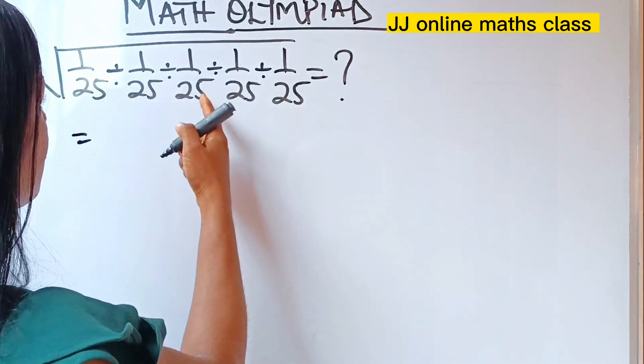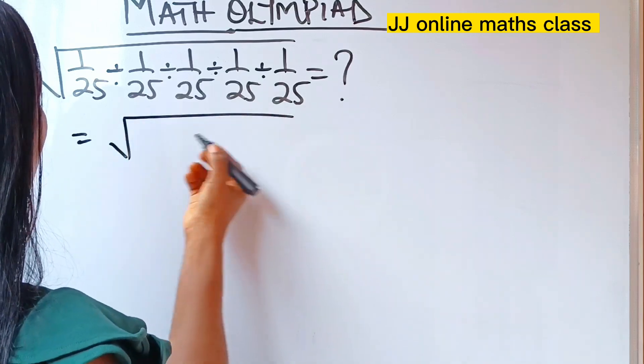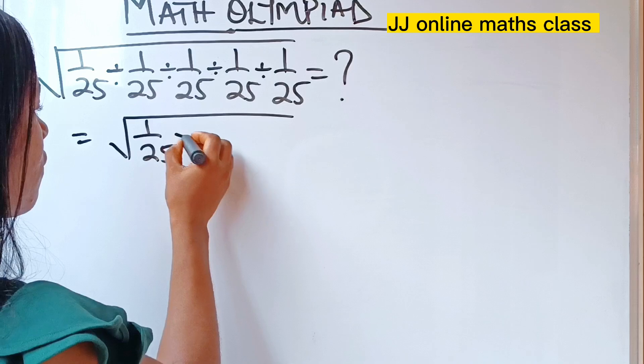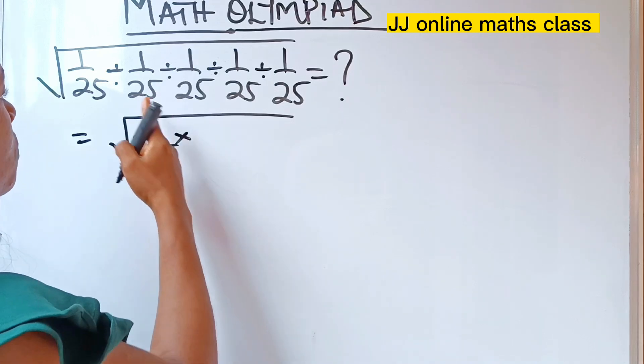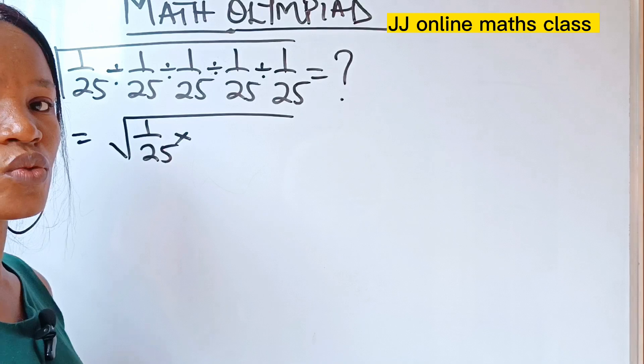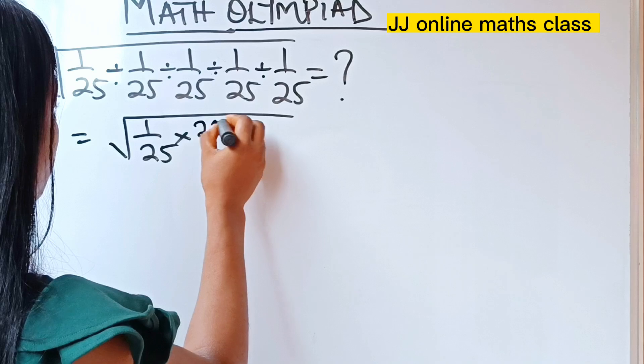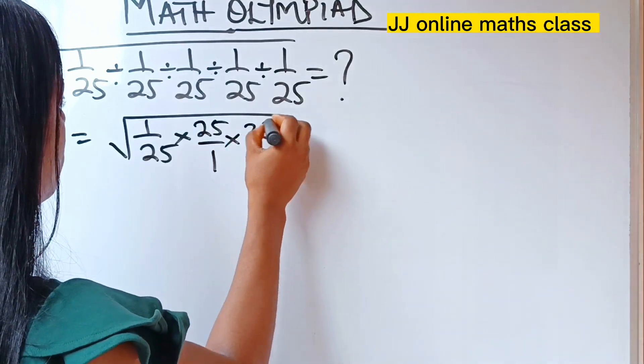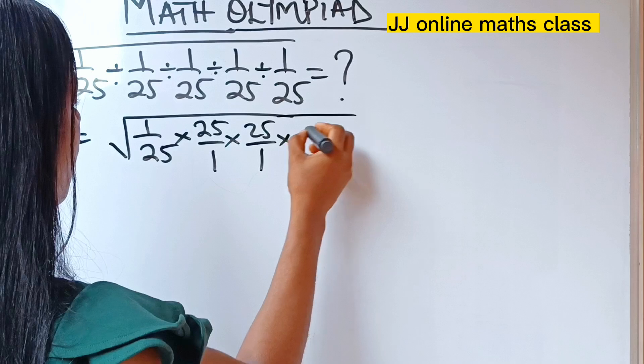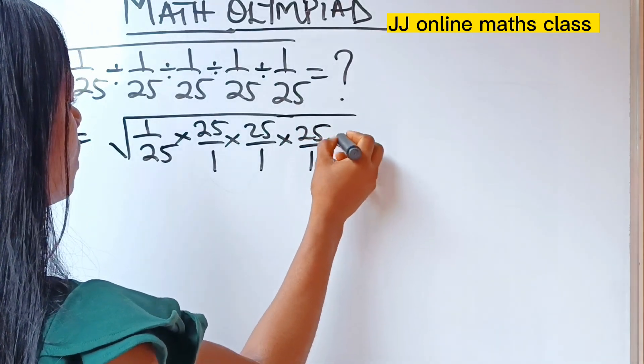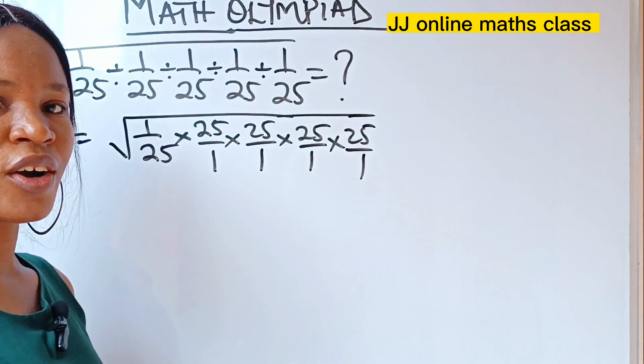we are going to write that this is equal to square root of 1 over 25 times... Once I put this multiplication, I'm going to change everything here to 25 over 1, all right? So it's going to be 25 over 1 times 25 over 1 times 25 over 1.